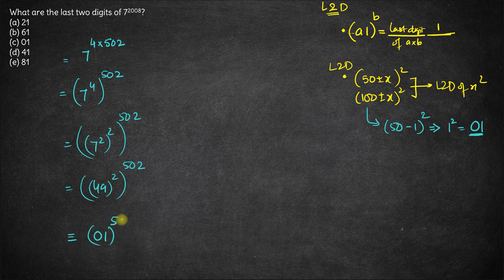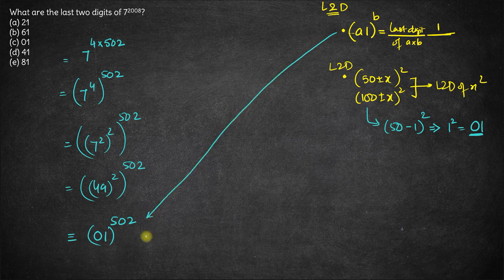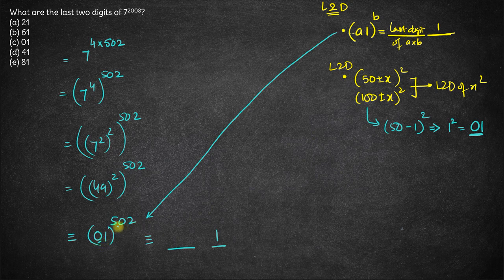And then we have power 502. Here we can use the first property: any number ending with 01 will have the last digit as 1, and the second last digit will be the last digit of 0 times 502, which is 0. Hence, the answer to this question is option C — the last two digits of 7 to the power 2008 is 01.